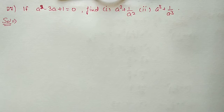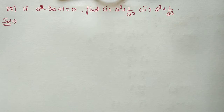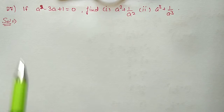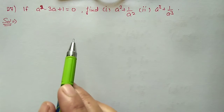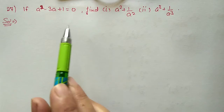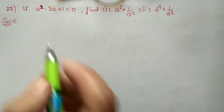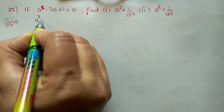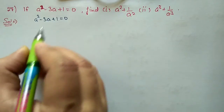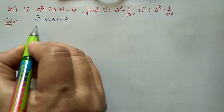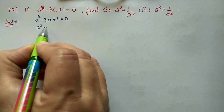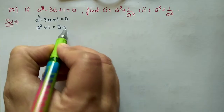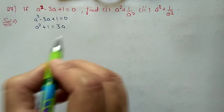Next, question number 27: if a² − 3a + 1 = 0, find the value of a² + 1/a² and a³ + 1/a³. First, we will change the given equation into the form a + 1/a = something, then it will be easy to calculate. So from a² − 3a + 1 = 0, we shift 3a to the right: a² + 1 = 3a. Now we divide the whole equation by a.